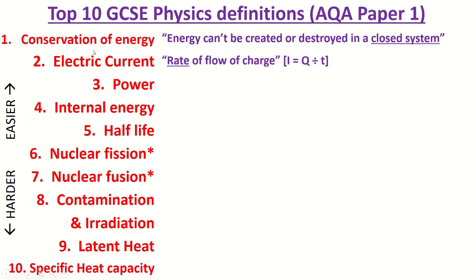Okay, first one: conservation of energy means energy cannot be created or destroyed in a closed system. Closed system means no energy gets in or out. You could also say total energy is constant — that's also fine.